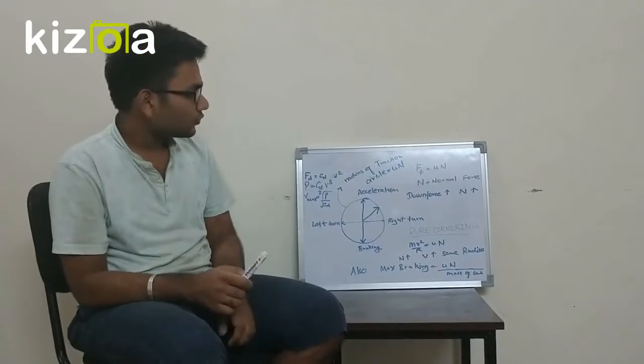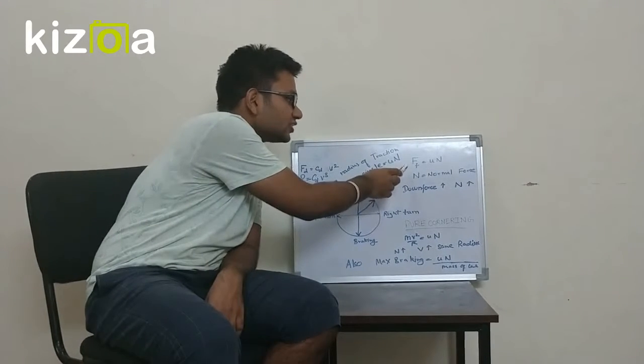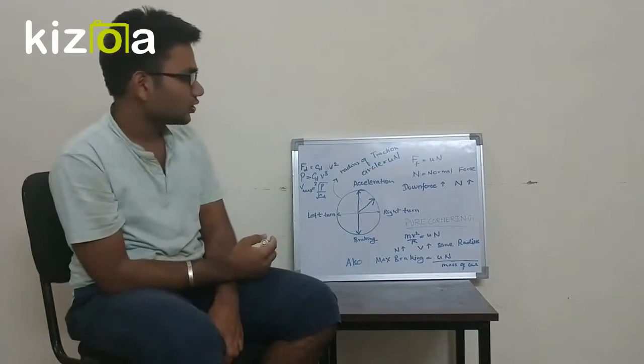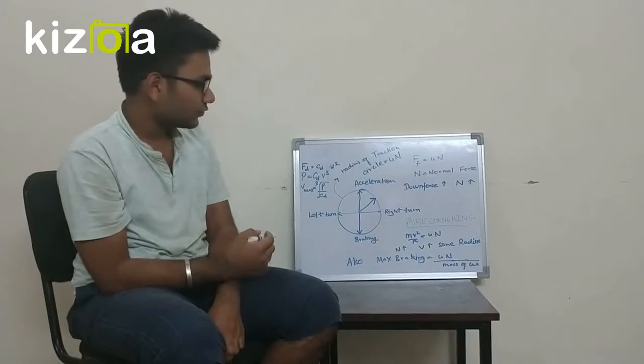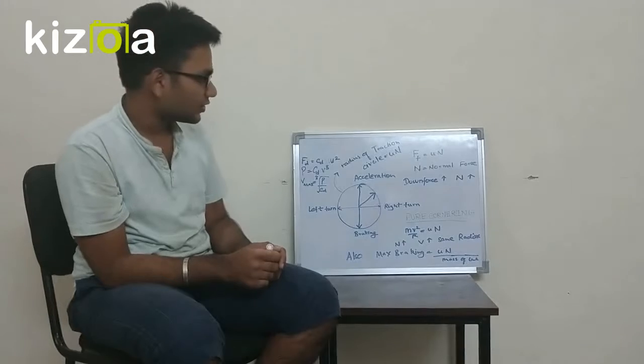Let us first talk about downforce. Downforce increases the normal reaction which results in an increase in friction force that you can get through the ground. So why do we need friction force? Friction force is responsible for providing centripetal and braking force.